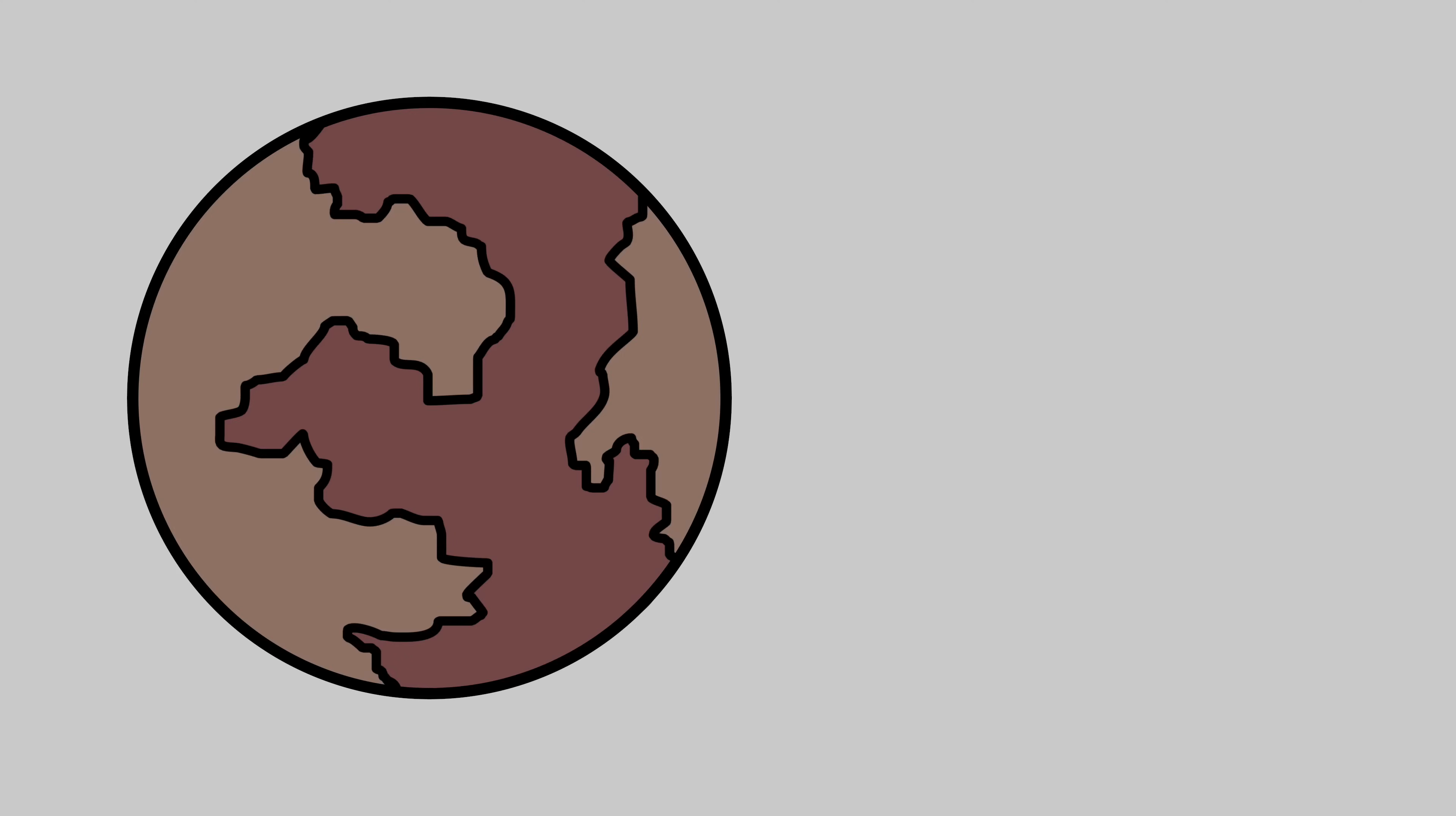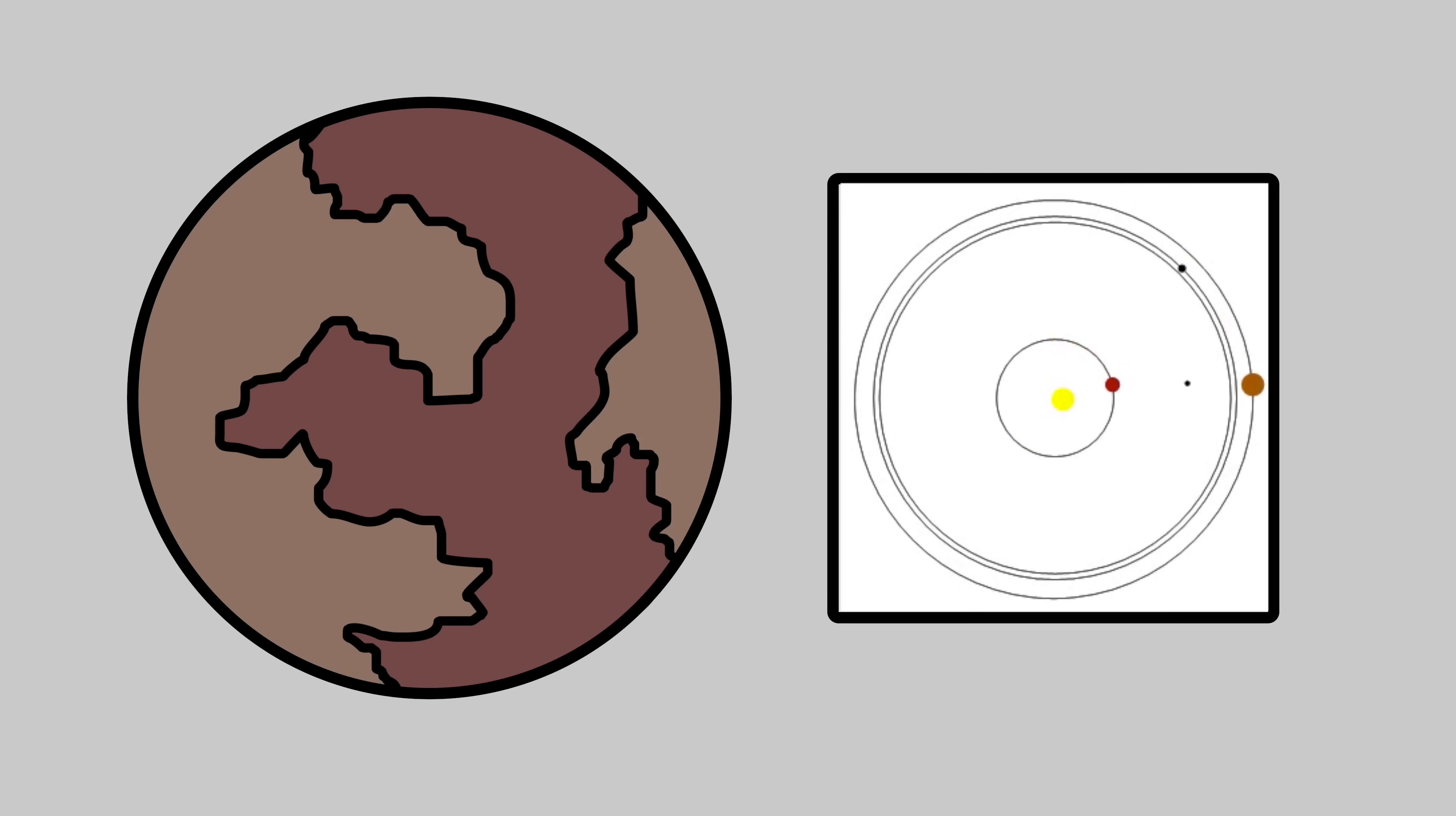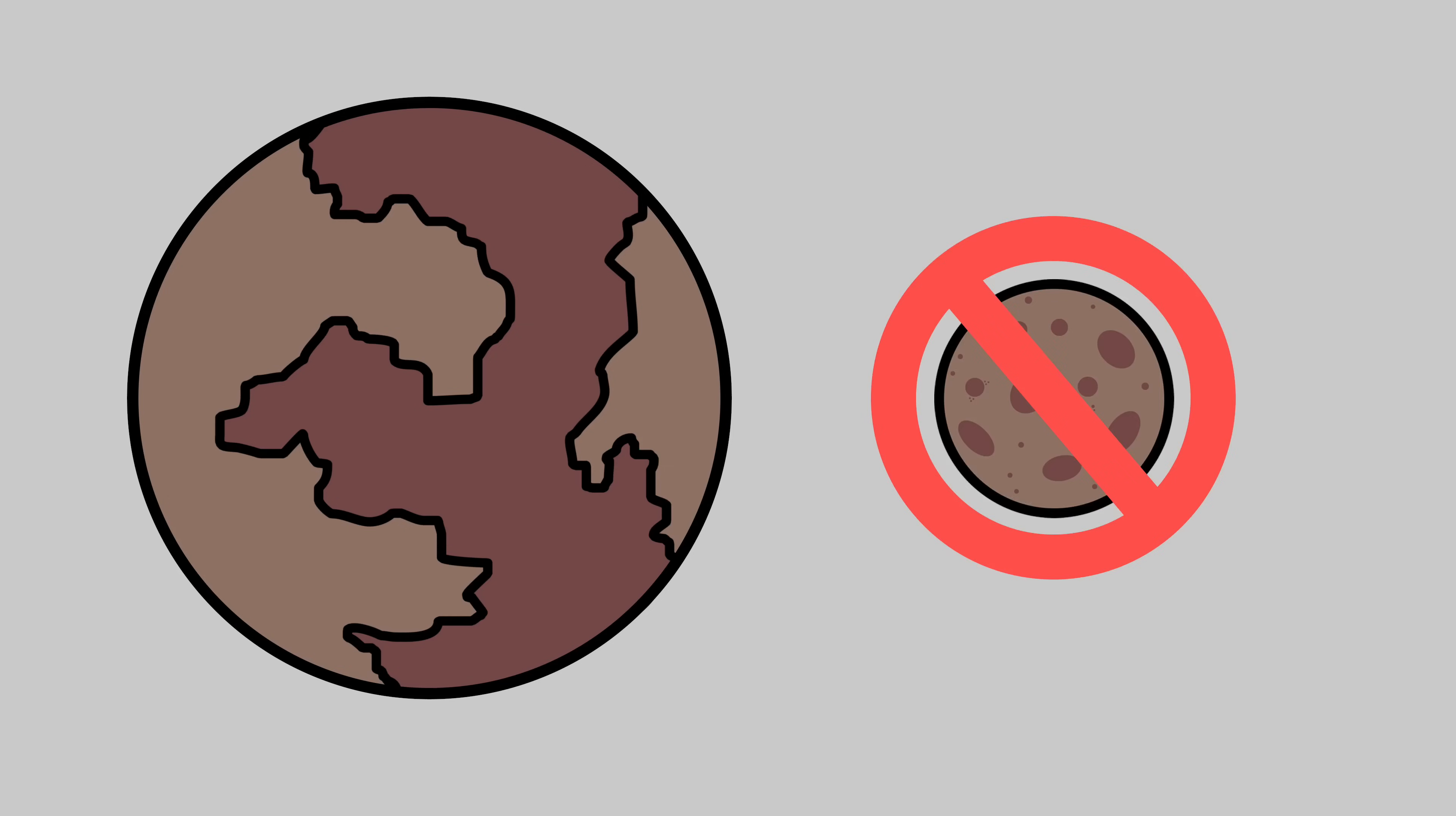For the most part terrestrial planets will have very few satellites, if any. They may occasionally capture a few asteroid minor moons, but they are unlikely to have any major moons.